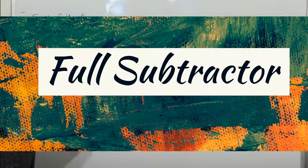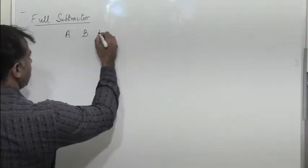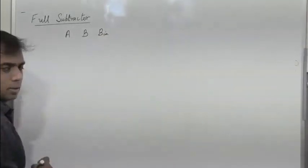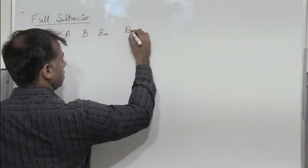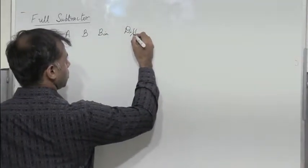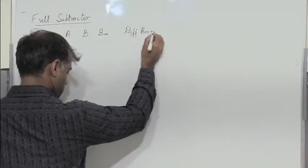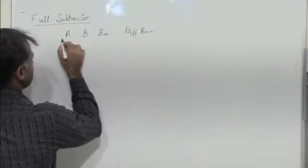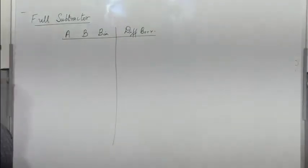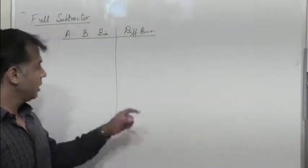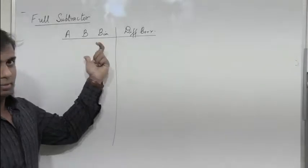In a full subtractor, we have three bits: a, b, and borrow in. We have difference and borrow as outputs. This is very similar to a full adder, where we have a, b, and carry in, and then we have the sum and carry out.